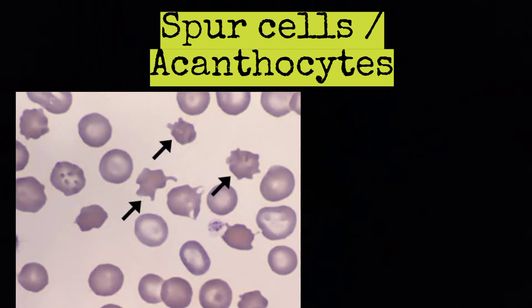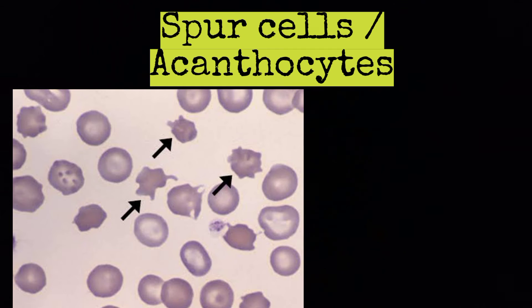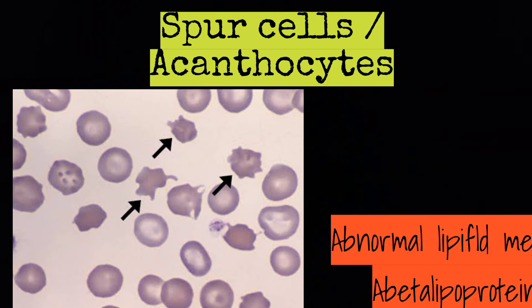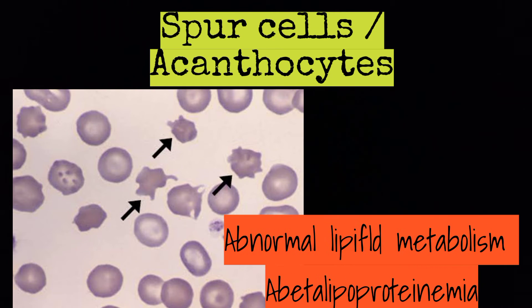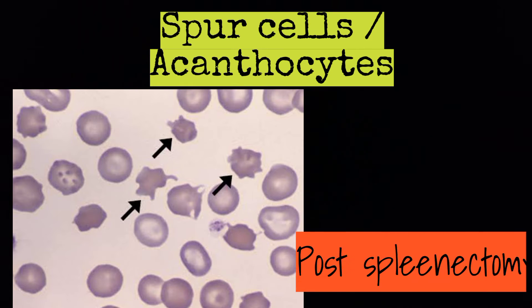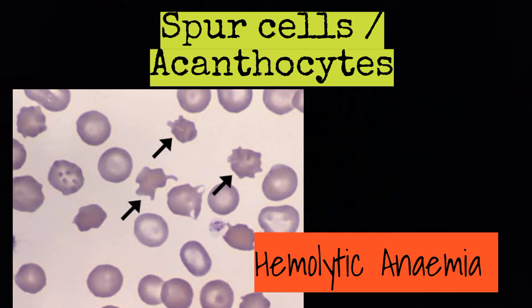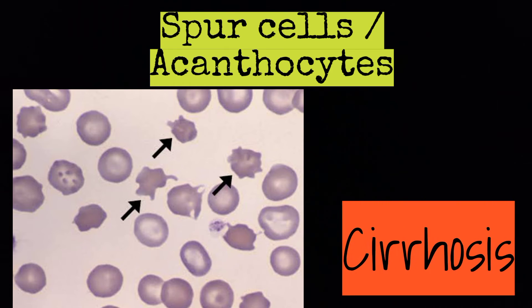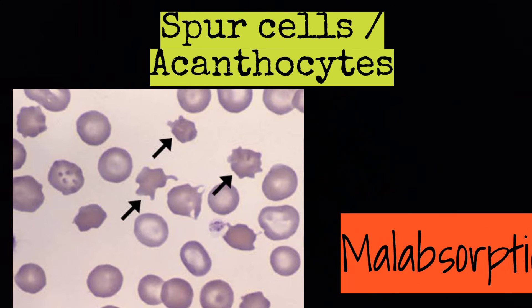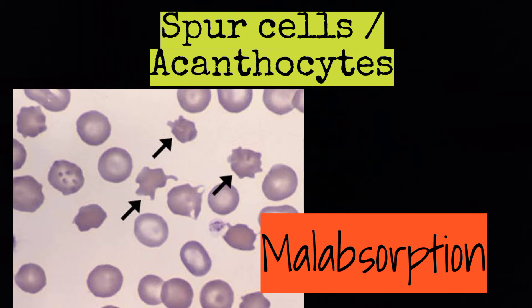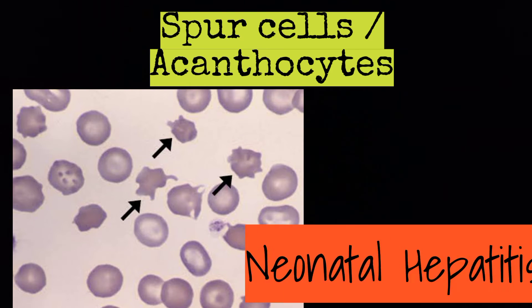Spur cells, also known as acanthocytes, are present in abnormal lipid metabolism, abetalipoproteinemia, post-splenectomy, hemolytic anemia, cirrhosis, malabsorption, and neonatal hepatitis.